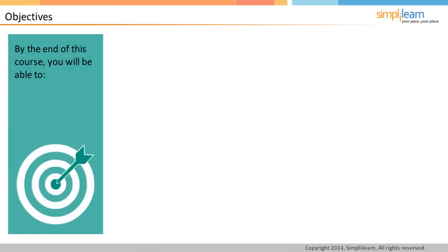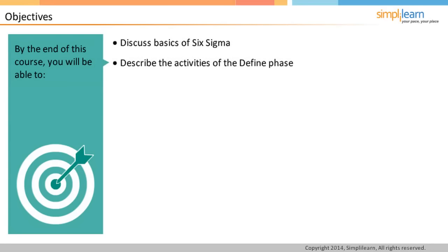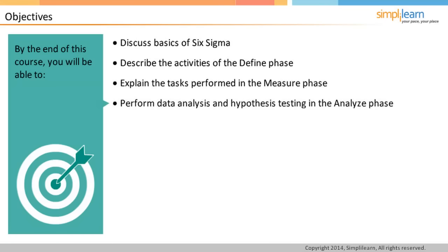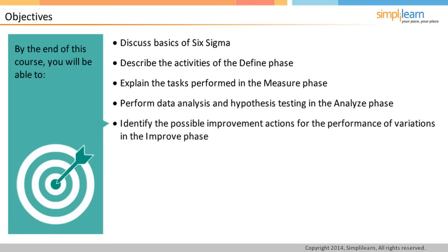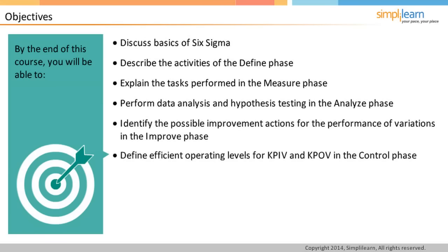After completing this course, you will be able to discuss the basics of Six Sigma, describe the activities of the Define Phase, and explain the tasks performed in the Measure Phase. You will also be able to perform Data Analysis and Hypothesis Testing in the Analyze Phase. Finally, you will be able to identify possible improvement actions for performance variations in the Improve Phase, and define efficient operating levels for KPIV and KPOV in the Control Phase.